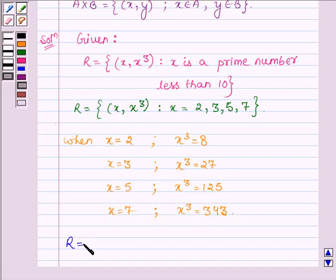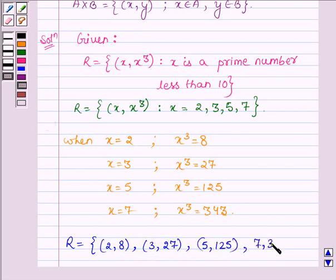Thus the relation R in the roster form can be written as {(2,8), (3,27), (5,125), (7,343)}.